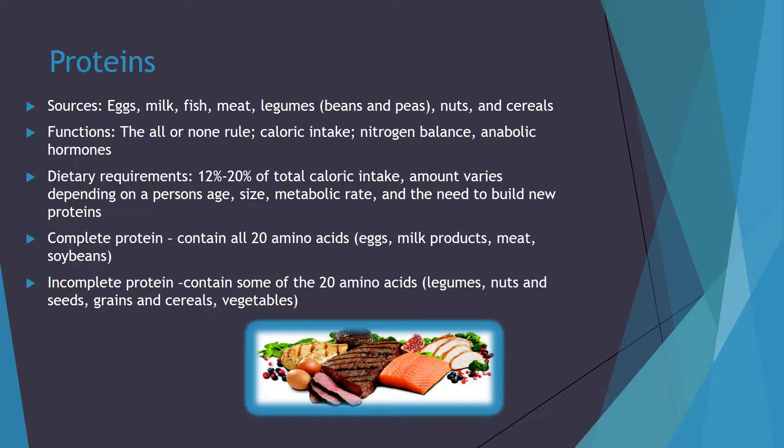The next nutrient we're going to look at is proteins. Sources of protein include eggs, milk, fish, meat, beans and peas, nuts, and cereals. There are several functions of protein in the body, one of them being caloric intake, another nitrogen balance, anabolic hormones, and the all-or-none rule. The all-or-none rule states that all amino acids needed to make a particular protein must be present in a cell at the same time and in sufficient amounts. If one is missing, the protein cannot be made.